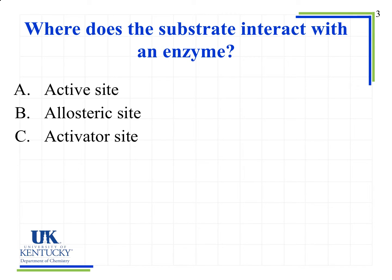Now let's look at where the substrate interacts with an enzyme. It always happens at the active site, because that's where the substrate interacts — whether under the lock-and-key model, where the shape is identical, or the induced fit model, where it's similar — for the substrate to interact with the enzyme. And that active site is also where a competitive inhibitor will interact with an enzyme.